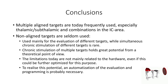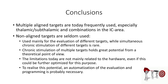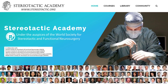To conclude: multiple aligned targets are frequently used today, especially thalamic-subthalamic combinations and combinations in the internal capsule area. Non-aligned targets are quite seldom used, and when used they are mainly for evaluation of different targets, while simultaneous chronic stimulation of different targets is quite rare — mainly with the exception of the VIM and GPI. Chronic stimulation of multiple targets holds great potential from a theoretical point of view, and the limitations today are not mainly related to hardware, even if this could be further optimized. To realize the potential, automatization of the evaluation and programming is probably necessary. This was a few of my personal thoughts on multiple targets — thank you for your attention.